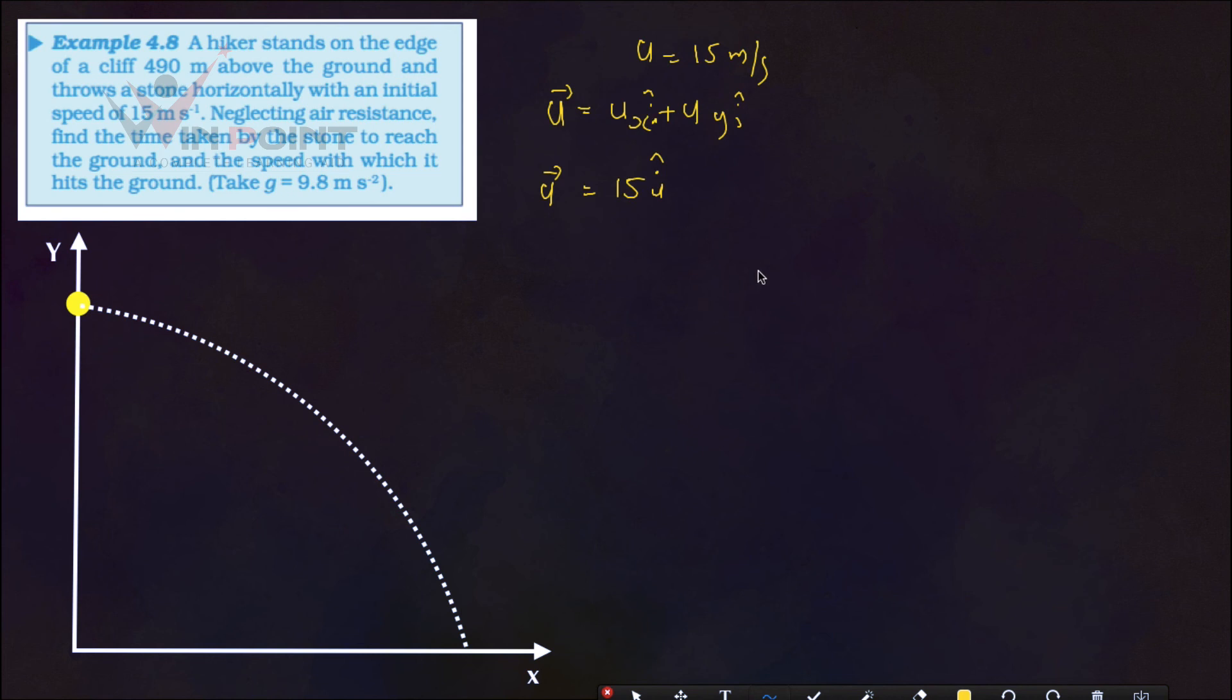When we are throwing a projectile at maximum height, the sine component will be 0. Only it is going to have a horizontal component because at maximum height, the velocity is 0. That is vertical component. Sin theta is 0. Still, it is having a horizontal component. That is why it is moving again. So U, here horizontal component is there, but there is no vertical component.